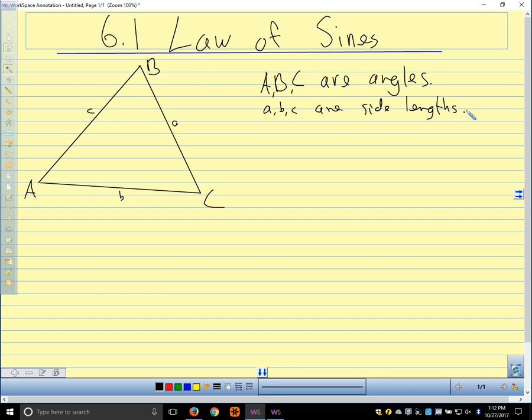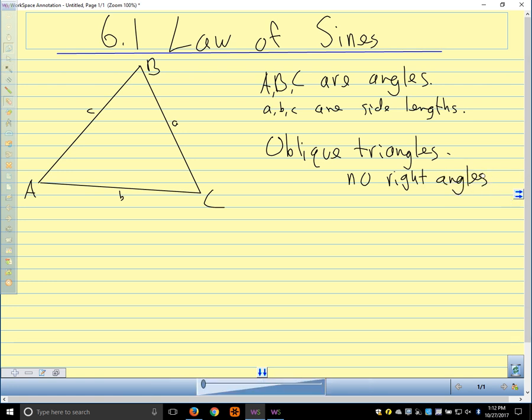And what we're talking about in chapter six are oblique triangles, which means they don't have any right angles. So we can't use our familiar right triangle trigonometry techniques on these triangles.